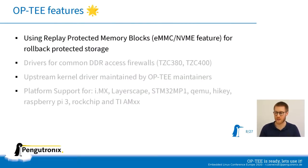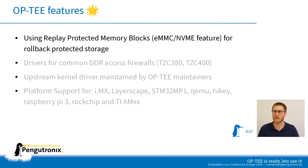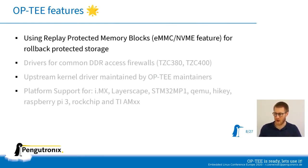One OP-TEE feature is Replay Protected Memory Blocks, an eMMC or NVMe feature for rollback-protected storage. A one-time operation fuses a key into your eMMC which is used to authenticate data sent to it. Since the key can never be changed afterwards, every write request to the eMMC must be authenticated. Nobody can roll back the storage to a previous point because they would need the authentication key, which is securely stored within OP-TEE and cannot be accessed.